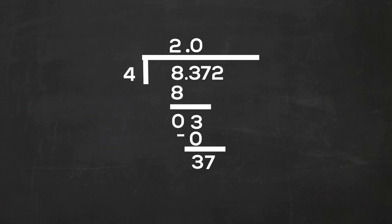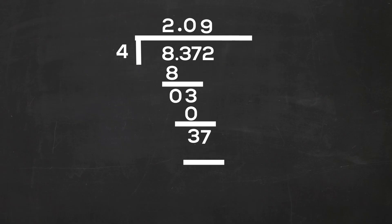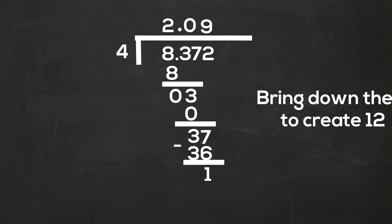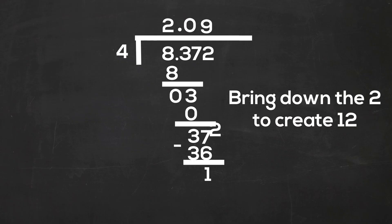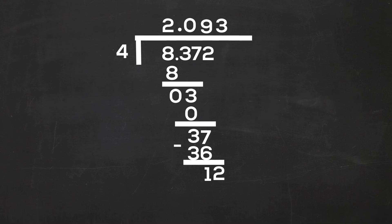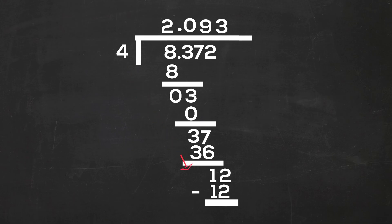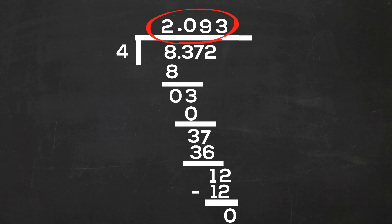4 goes into 37 nine times. 9 times 4 is 36. 37 minus 36 is 1. Bring down the 2. 4 will go into 12 three times. 3 times 4 is 12. And 12 minus 12 is 0. So 8.372 divided by 4 is 2.093.